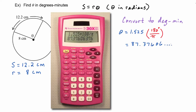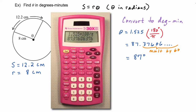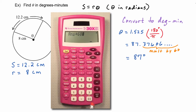Now we have to put that into degrees and minutes. We have 87 whole degrees, and then we take the decimal part and multiply by 60 to convert it to minutes. The easiest way is to subtract out the 87 degrees, take the decimal part, and multiply by 60. Since we get 22.5, we round to the nearest minute, giving us 23 minutes. So theta is approximately 87 degrees and 23 minutes.